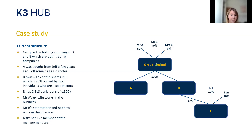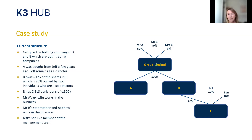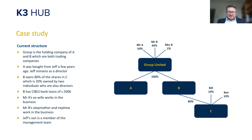There are family members working in the business, which is really important when it comes to the tax rules — something you need to have a really good look at when starting an EOT project. Company A was bought into the group from Jeff, who still works in the business as a critical director. Jeff's son is also a senior management team member. Mr A's ex-wife works in the business; Mr B's stepmother and nephew also work in the business — all genuine, valued employees, but they do create some tax issues we'll cover later.